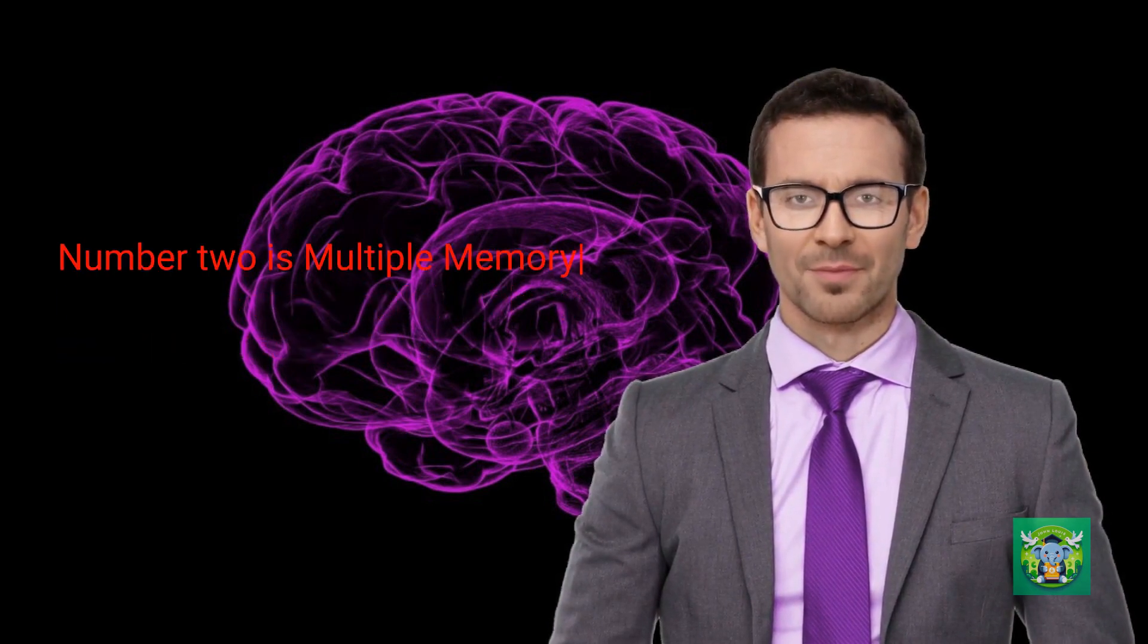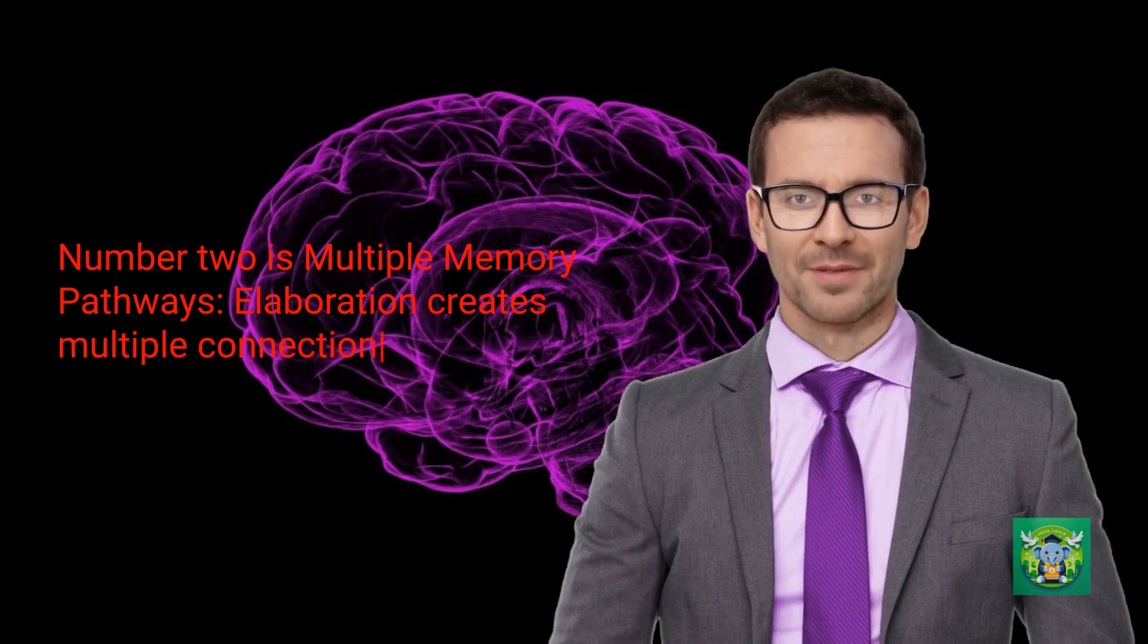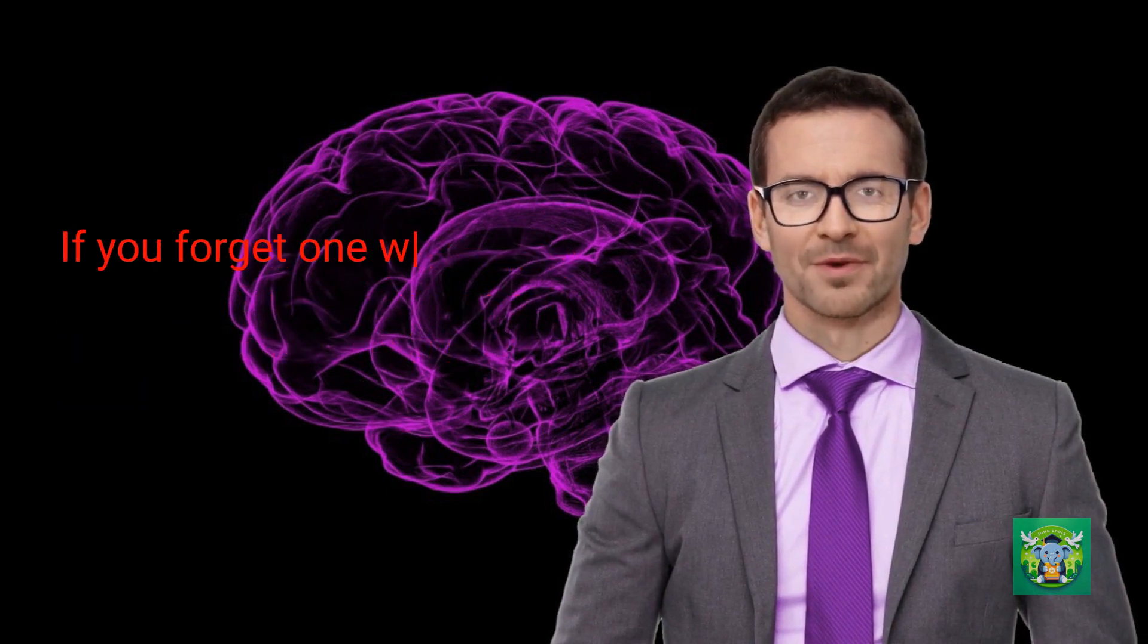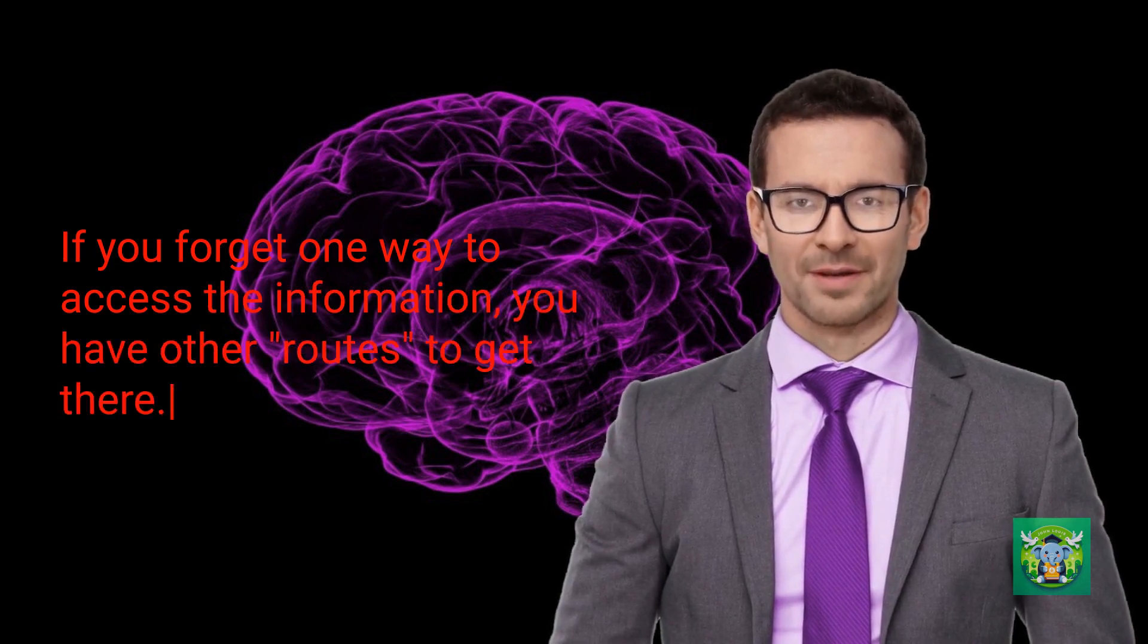Number two is multiple memory pathways. Elaboration creates multiple connections in your brain. If you forget one way to access the information, you have other routes to get there.